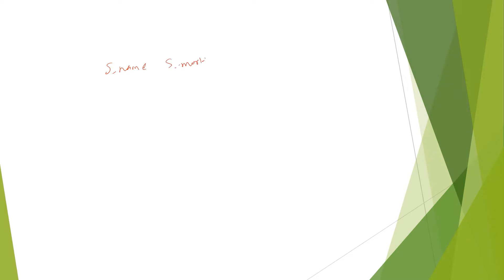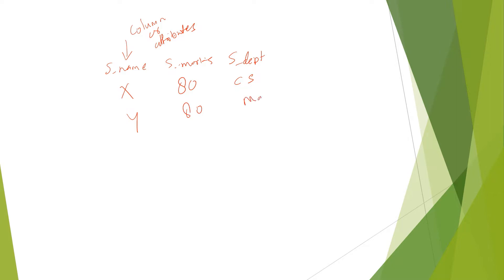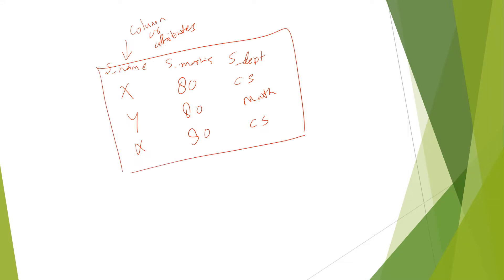Let's say for example, in this I have taken student name, student marks, and student department. These are our attributes. I have student X, it has 80 marks, department is computer science. I have another student who has 80 marks, he has department mathematics. Another student X who has 80 marks, he is part of the computer science department.